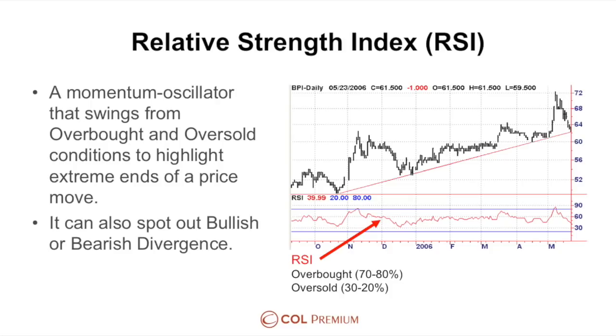Your RSI indicator isn't complicated — it just has one line, whether red or black, that moves like a ping pong between horizontal lines: a top horizontal line and a bottom horizontal line. When prices hit the top line, it means prices are overbought. When prices go up too high, too fast, too soon, it becomes overbought.